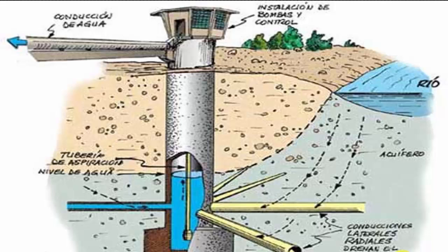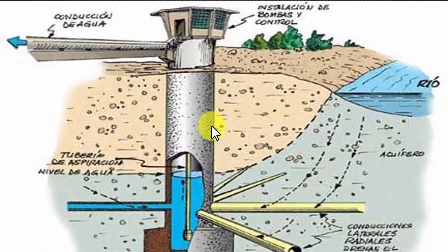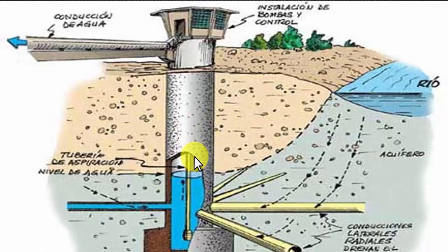En la mayoría de los casos, la recarga natural ocurre en tiempo de lluvia: las corrientes superficiales llevan grandes cantidades de agua y depositan parte de este líquido a los acuíferos. En la parte superior del pozo se coloca una bomba para extraer el agua. Cuando se construye un pozo se realiza una prueba de bombeo para determinar la estabilidad, la profundidad adecuada y la cantidad de agua disponible, medida en litros por segundo o galones por minuto.